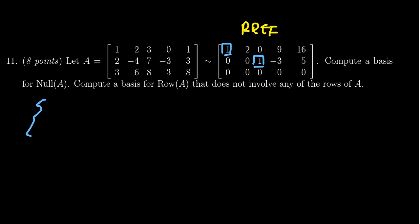If you prefer you can write this as a system of equations: x1 minus 2x2 plus 9x4 minus 16x5 equals 0. You're going to get x3 minus 3x4 plus 5x5 equals 0 and then 0 equals 0. We don't need that last equation honestly it doesn't help us out at all.